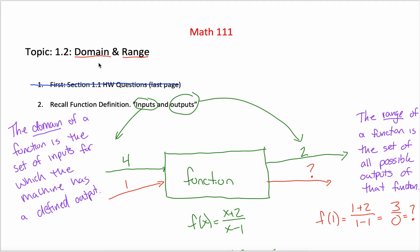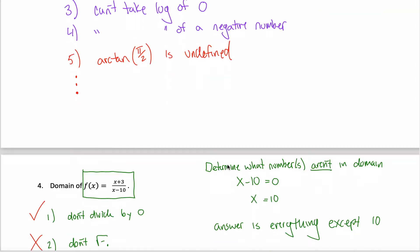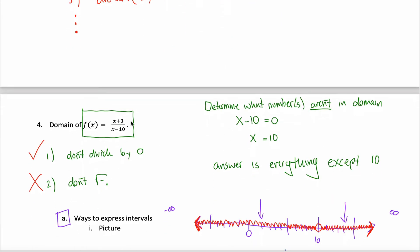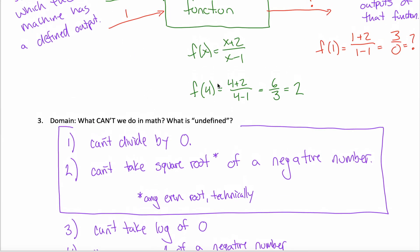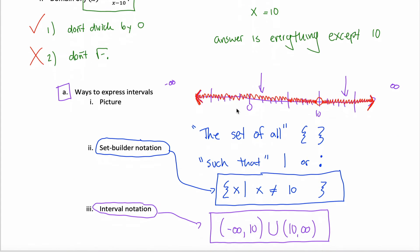In this video, we're going to continue talking about domain and range, specifically of functions that are given algebraically — so we have the equation of the function. In the previous video, we looked at functions where we had to make sure we didn't divide by zero, the first of our two domain rules. In this video, I'm going to look at functions where we have to make sure we don't take the square root of a negative number.